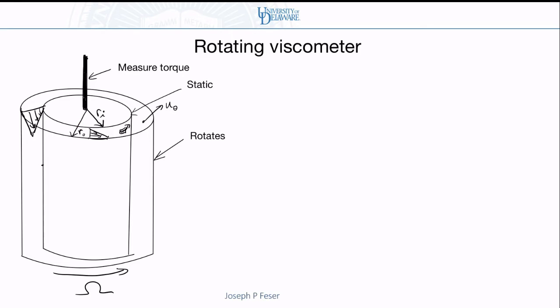So r times omega is the velocity of the outer wall, and the inner wall is stationary, so its velocity is zero. And then if the gap in between is thin, then the velocity profile will be sort of a linear interpolation in between. So it'll go from zero at the inner wall to r0 times omega at the outer wall.